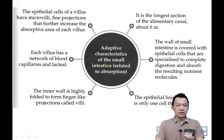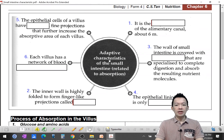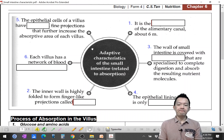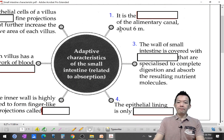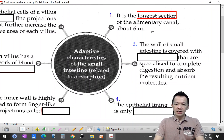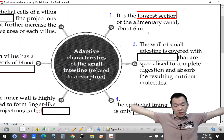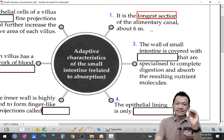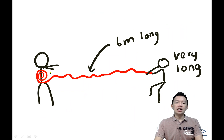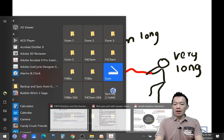What are the characteristics of the small intestine so that it can absorb food efficiently? You copy these points in your notes — there are six points. Number one: it is the longest section of the alimentary canal, about six meters. So the small intestine is coiled inside our body, about six meters long in the adult body.